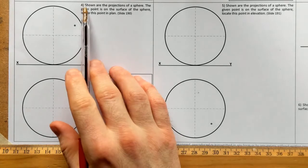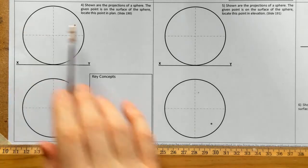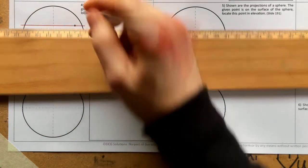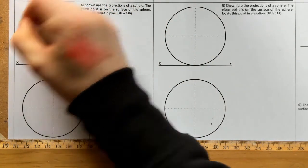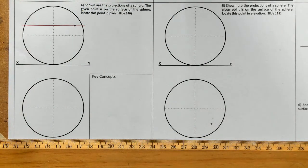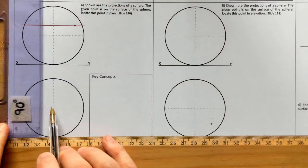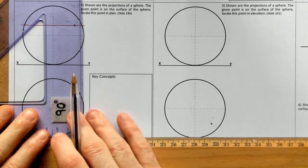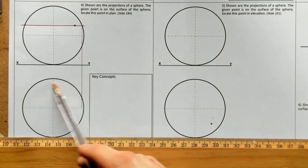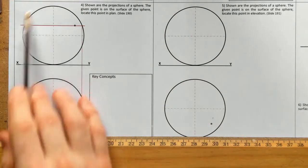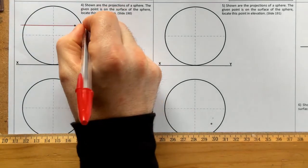Question four: shown are the projections of a sphere, the given point is on the surface — locate this point in plan. When doing a horizontal cut through the point in elevation, the cut is always a straight line parallel to the XY line. Where it cuts the sphere it does so at two points — right here and right here — where it runs across the axis line. Projecting those points down, we're going to have another circle cutting the top of the sphere, since as we cut off the top of the sphere it generates another circle.